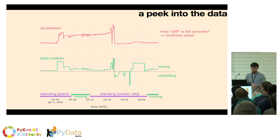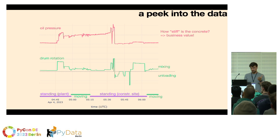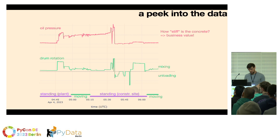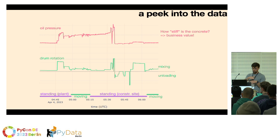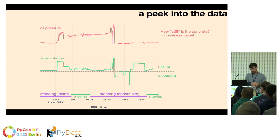Let's look at the bottom first: we have an indicator of whether the truck is standing or moving. In the beginning it's standing at the plant, then it's driving to the construction site, then it's at the construction site, and later driving home. In the middle we have drum rotation — if it's positive, the drum is rotating inwards and pulling in the concrete. At the middle of the construction site bit it's negative, meaning this is where it's unloading.